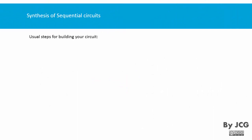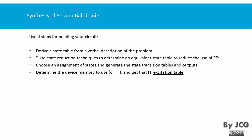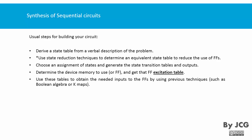So what are the usual steps for building your circuit? First you need to derive a state table from a verbal description of the problem. Then you want to use state reduction techniques to determine an equivalent state table in order to reduce the use of flip-flops. In this video we will not see the state reduction techniques — you will see this in the next video. Then you want to choose an assignment of states and generate the state transition tables and outputs. You also want to determine the memory device to use, in this case the flip-flop, and get the flip-flop excitation table. You use these tables to obtain the needed inputs of the flip-flops using techniques such as Boolean algebra or Kmaps. Then you get the output functions, and finally you implement the synchronous sequential circuit.